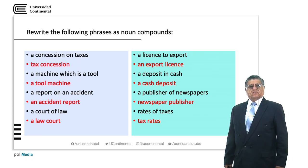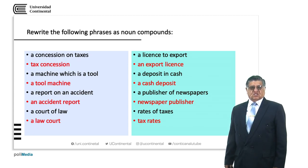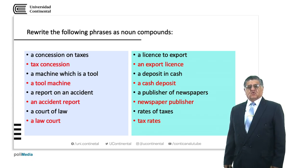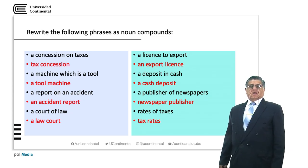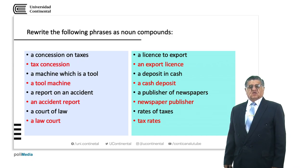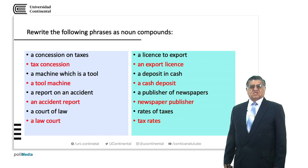A deposit in cash — what are we talking about? About the cash or about the deposit? We are talking about the deposit, which in this case was or is in the form of cash. A publisher of newspapers — we talk about the publisher, not about the newspapers: 'newspaper publisher'. And finally, rates of taxes — not particularly about taxes, but about rates. The information is on rates. So we have 'tax rates'.